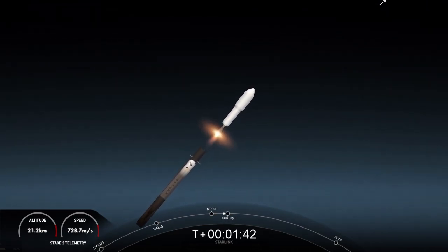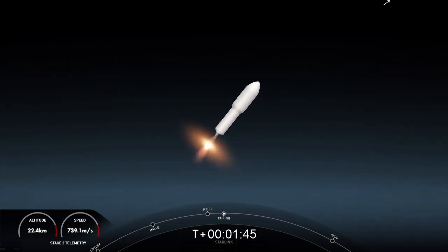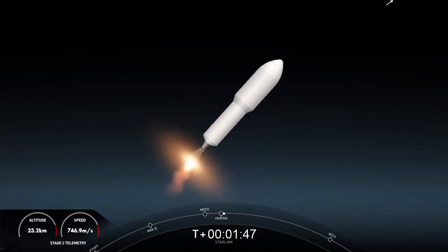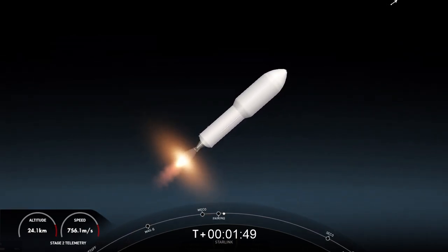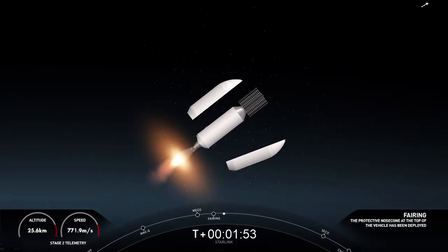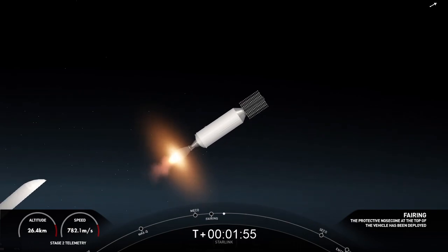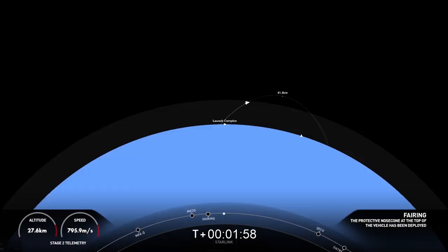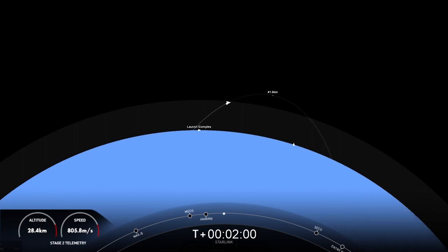MECO and back startup. So we did have a successful main engine cutoff. MECO, stage separation, second engine start of the Merlin vacuum engine, and you just saw on screen that the fairing halves have been deployed from the top of our second stage.